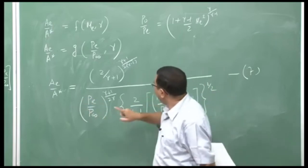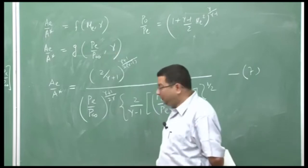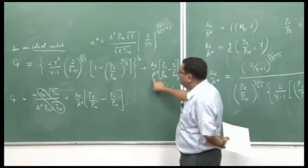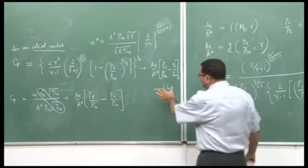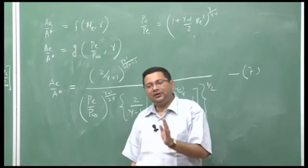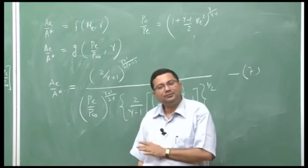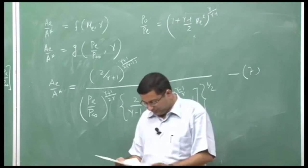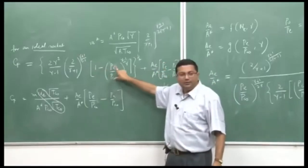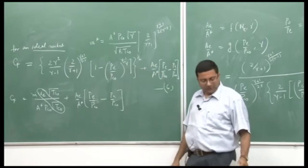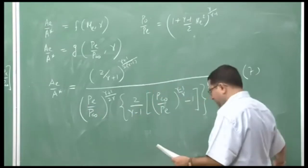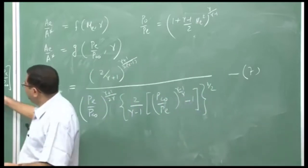If we take Equation 7 and substitute the area ratio back into the thrust coefficient expression (Equation 6), the thrust coefficient becomes a function of only the pressure ratio and γ. The area ratio term is replaced by the pressure ratio expression, and the combination of terms gives the thrust coefficient purely as a function of the pressure ratio P_e/P_c0 and γ.